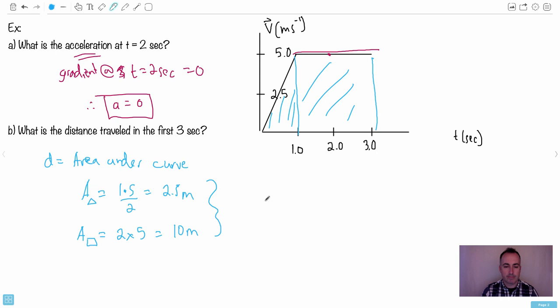What's the total area then? The distance traveled is just 10 plus 2.5, which equals 12.5 meters. Awesome. That's how you solve this.